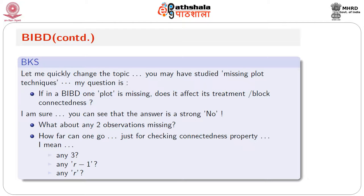Why? Every treatment has r replications and r is definitely more than one. If only one observation is missing, whatever the treatment level for that missing observation, that treatment still occurs elsewhere. Therefore, through other appearances, it will be connected to the rest. What about any two observations missing — how far can we go? Could it be any r-1 missing, or any r missing?